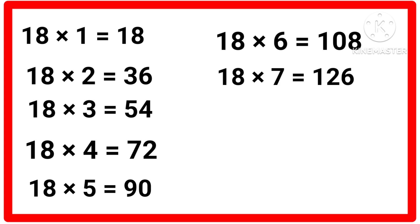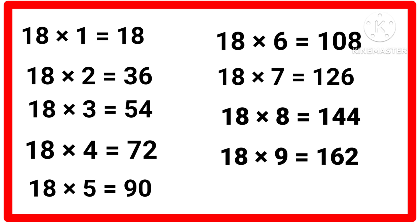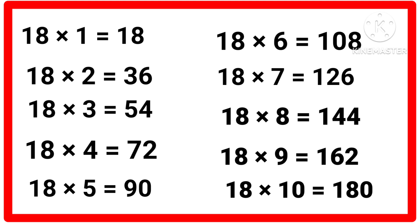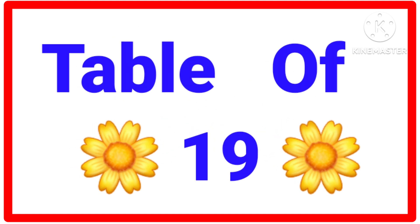18 sevens are 126, 18 eights are 144, 18 nines are 162, 18 tens are 180.